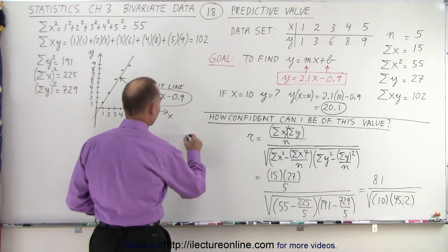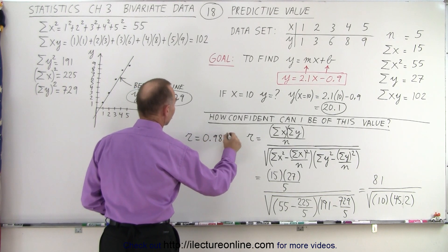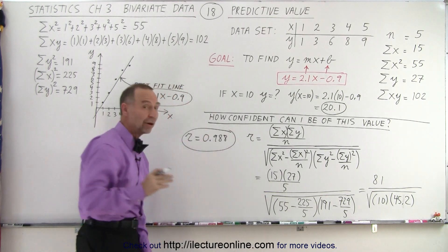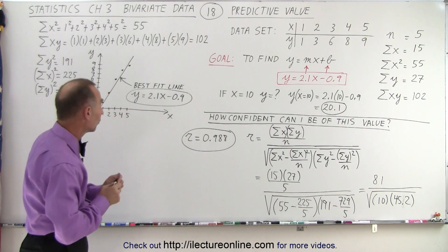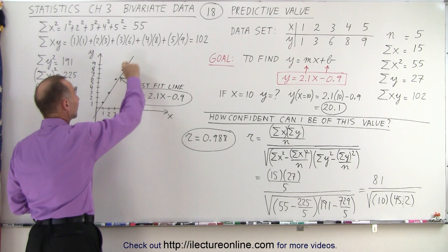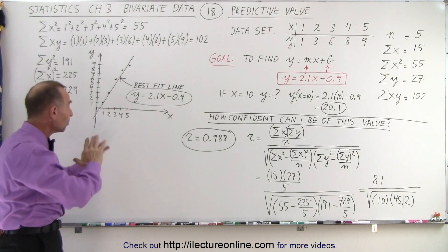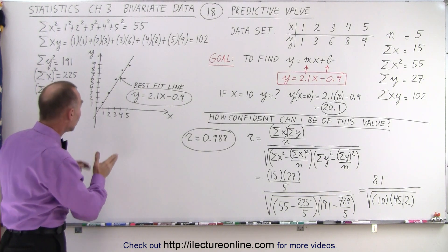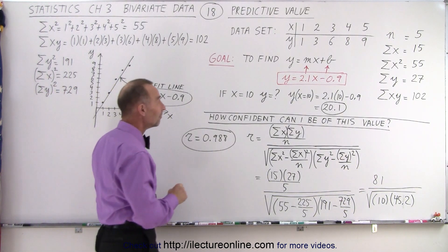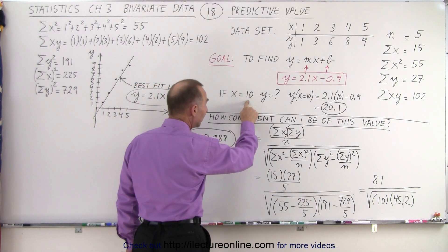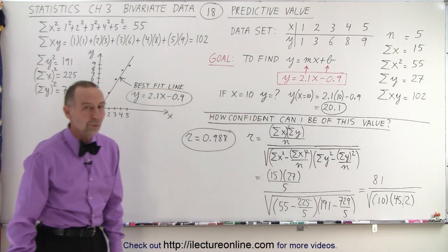So that means I get an R value of 0.988. Now you recognize this as being very close to 1, therefore this is a very strong correlation. What it means is we can be very confident that the best fit line is a really good representation of the data, and that the relationship between the x and y values are very close to that particular equation. And therefore, we can be fairly confident that if we have value for x equals 10, that the corresponding value for y is very close to 20.1.